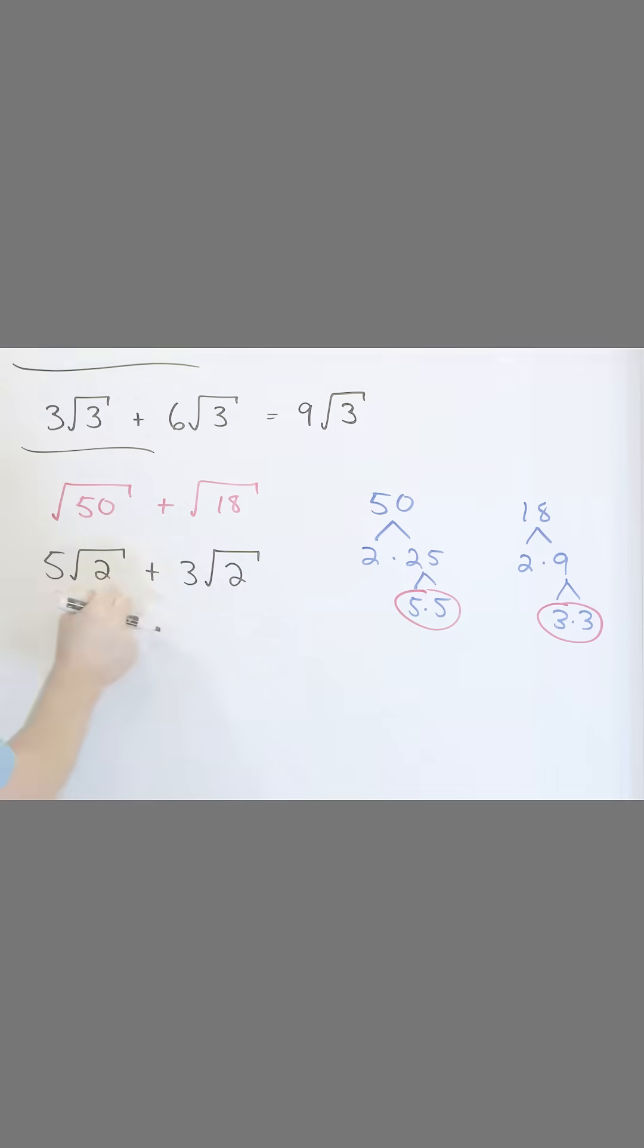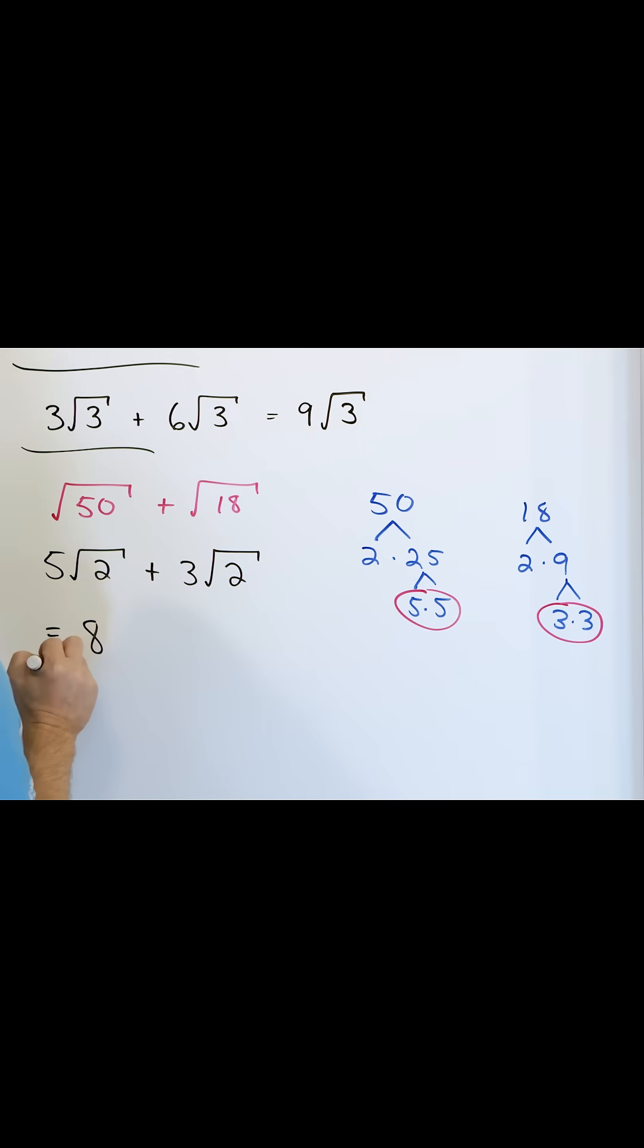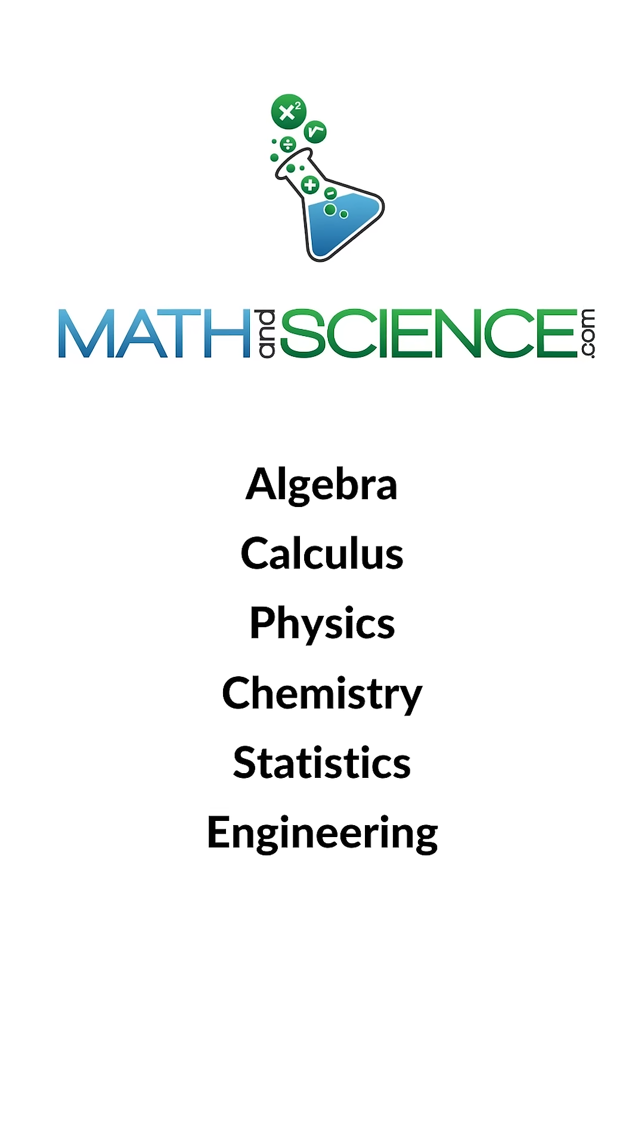Now look at what you have. We just now add the coefficients. How many of them do you have? You have 8 of them. 8 of what? Well, 8 of these things that we're calling a square root of 2, which is just a number. So we'll just circle that.